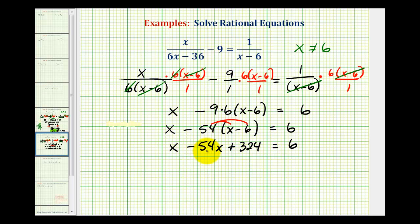We'll go ahead and combine the like terms here. We have one x minus 54x. That's negative 53x plus 324 equals six. We're falling down to a basic two-step equation. So now we'll go ahead and subtract 324 from both sides. This is zero. We have negative 53x equals, this is going to be negative 318.